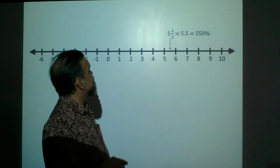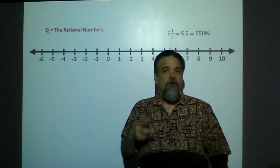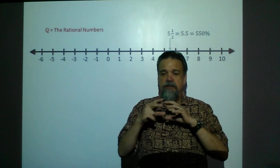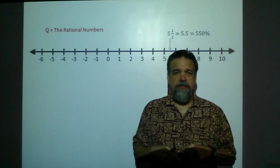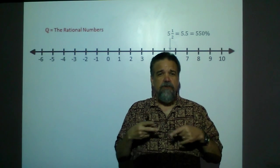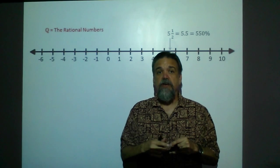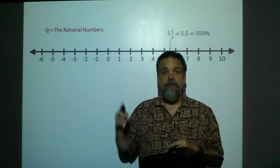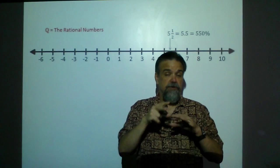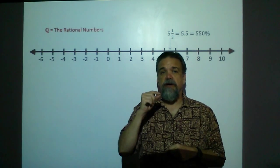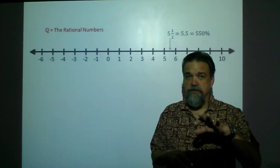Now what are these numbers called? These numbers are called the rational numbers, abbreviated by the letter Q. You're thinking rational doesn't start with Q — I know — but the word quotient does start with Q, and every rational number is a quotient: a number divided by another number. In particular, it's an integer divided by another integer, except zero. You can't divide by zero.